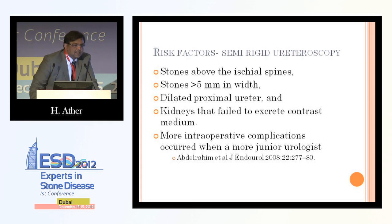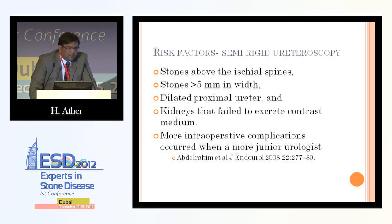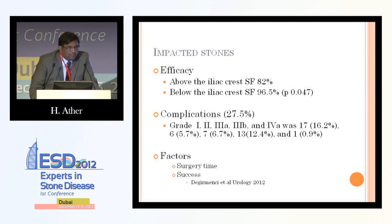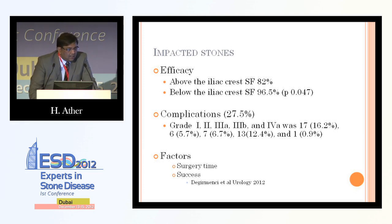Summarizing the risk factors for semi-rigid ureteroscopy: stone above the ischial spine, stones greater than 5 mm, dilated proximal ureter, and kidneys that fail to excrete — all result in significant complications. Being aware of these factors beforehand allows you to be more careful in avoiding them. For impacted stones above the iliac crest, stone-free rate chances are less and complication chances are higher. Dimitri and colleagues identified two factors — surgical time and success of the procedure — as contributing to complication rate.